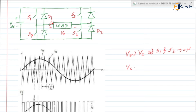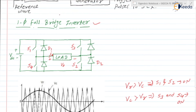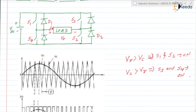If VC is greater than VR, then we are going to trigger switches S3 and S4. This logic is programmed into the comparator block. Accordingly, the comparator compares and the trigger pulse generator operates on this logic: if VR is greater than VC, then S1 and S2 will be turned on; when VC is greater than VR, S3 and S4 will turn on.